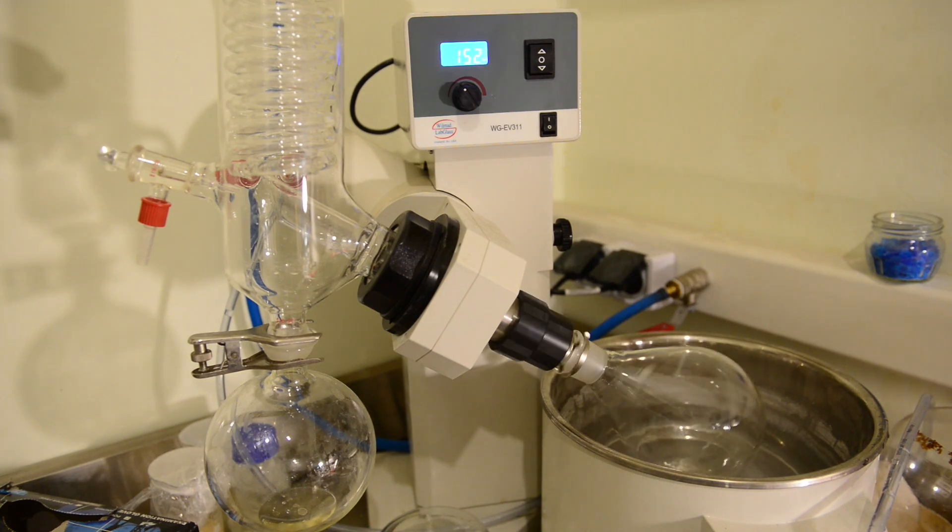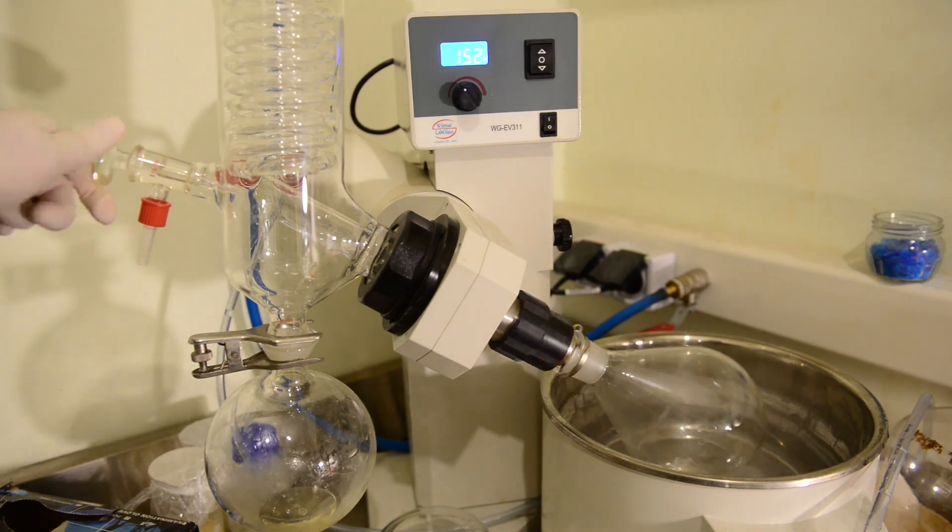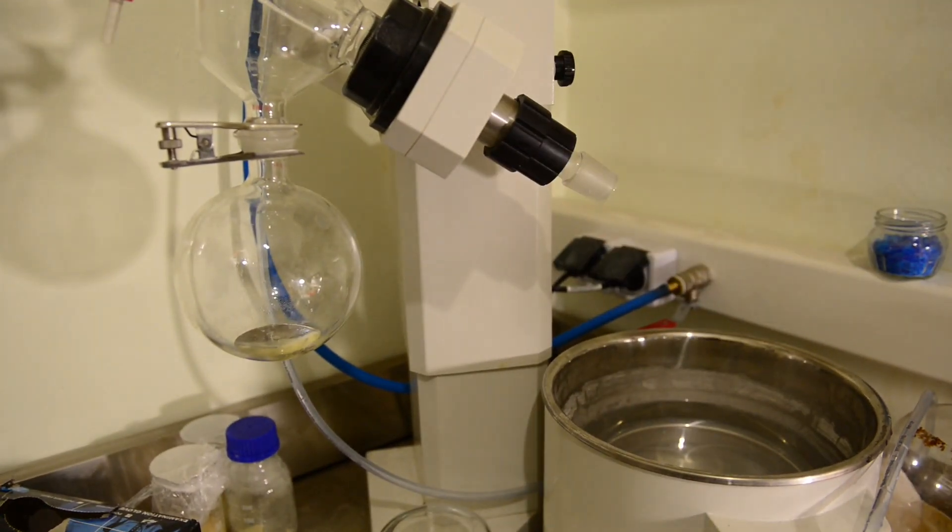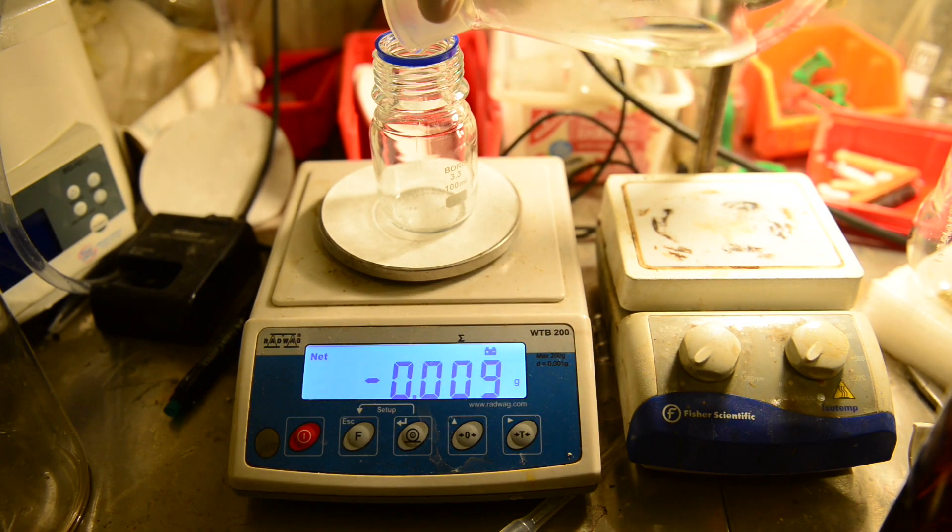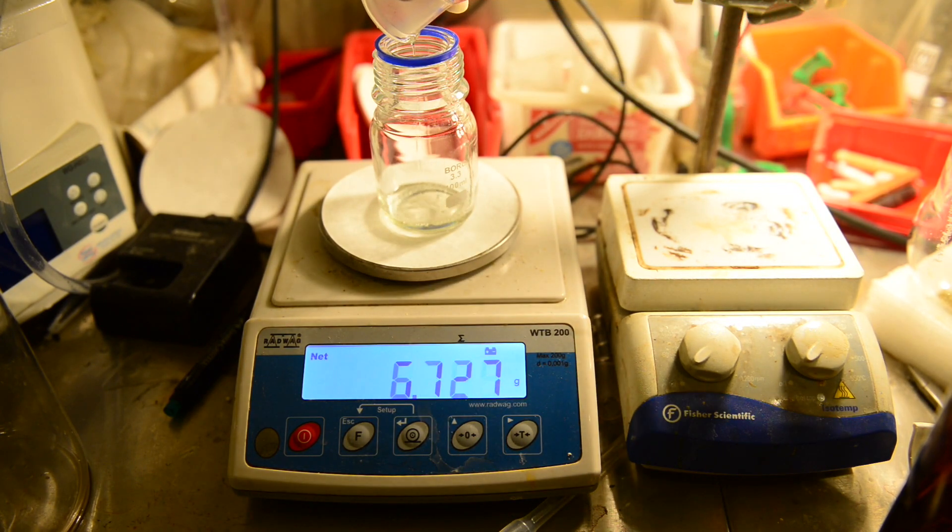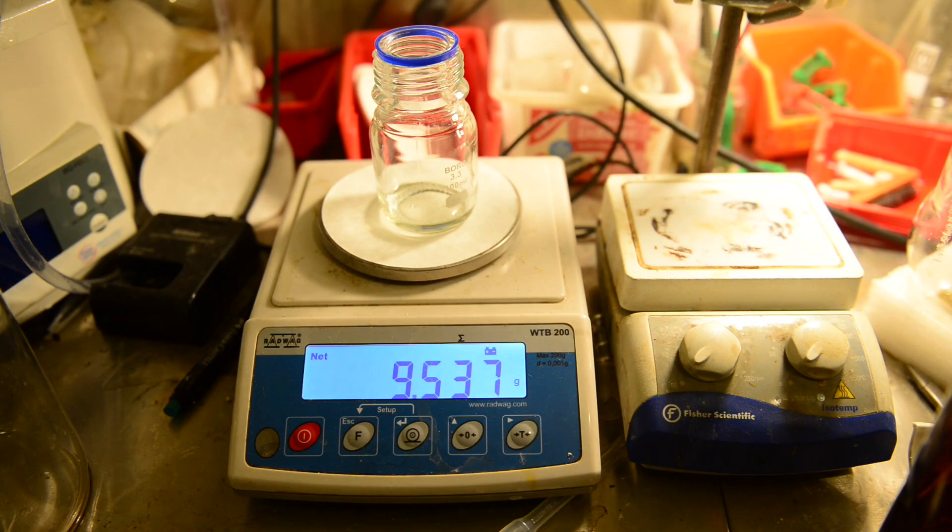This must be pure enough for the next steps of synthesis. 4-bromo-1,2-methylenedioxybenzene. The total yield is 9.5 grams which represents 61% of theory. This is not bad taking into consideration that we have performed this reaction for the first time and the yield of the procedure described in the literature was just 67%. Thanks for watching guys.